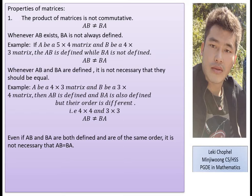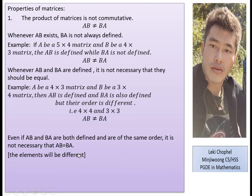Even if A and B are both square matrices of the same order — say both 2×2 — and both AB and BA are defined and produce a 2×2 result, the elements may still differ. Sometimes they will be equal, but most of the time the elements are different, so the matrices are not equal.